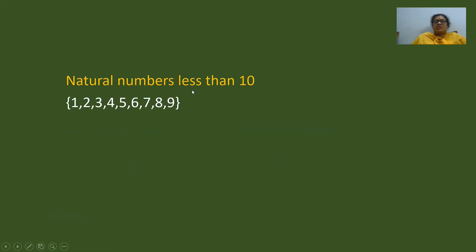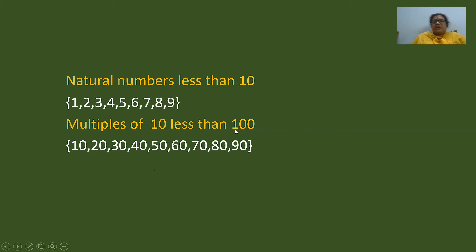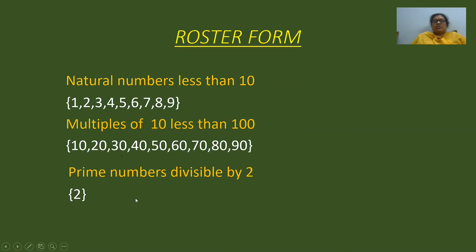Now, the natural numbers less than 10 are 1, 2, 3, 4 — since it is given they should be less than 10. The multiples of 10 less than 100 are 10, 20, 30 and so on — since the condition says less than 100, we take till 90 only. And the prime numbers which are divisible by 2: a number must be prime and divisible by 2, and only one such number exists — that is 2. Writing the elements in a flower bracket like this is called roster form.